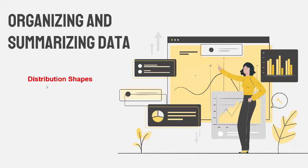In this lecture I want to talk about the shapes that different distributions can take on. In a previous lecture we learned about histograms, and when you have a data set the shape that a histogram takes on tells you a lot about the characteristics of that sample or population. In the next few slides I have five common shapes that histograms take on that we'll see in this class.